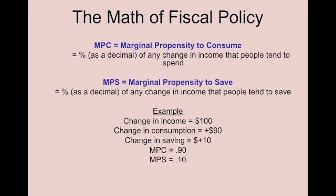So if the government went out and spent $20 buying that gun, then according to the MPC, that change in someone's income is going to tell the government how much of that $20 is going to be spent and lead to greater consumption.